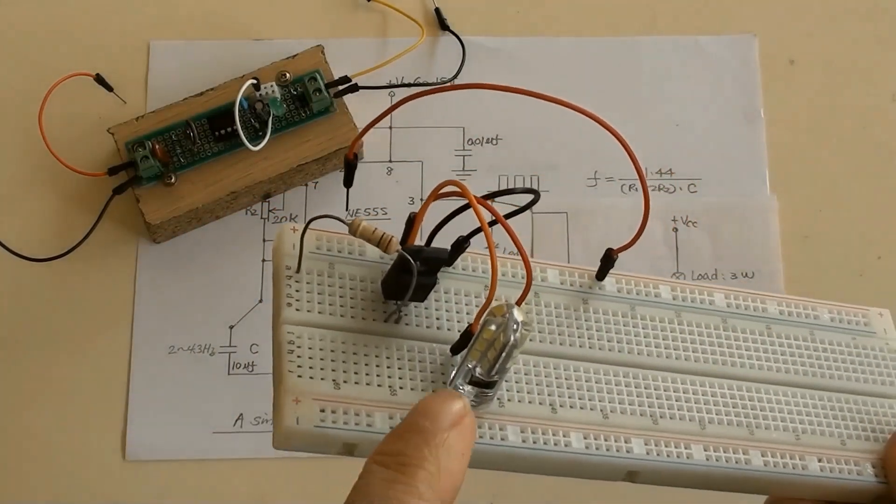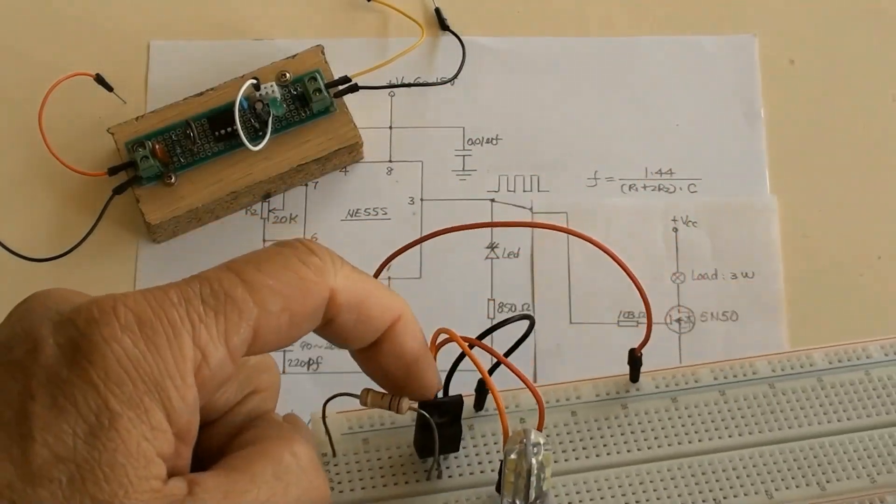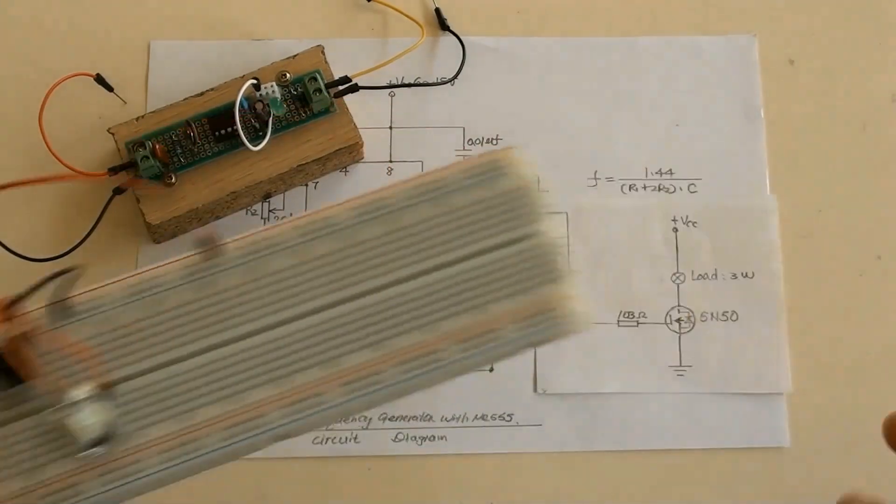As an example is here: a 3 watt bulb as a load, a 103 ohms resistor, and a MOSFET of 5N50.